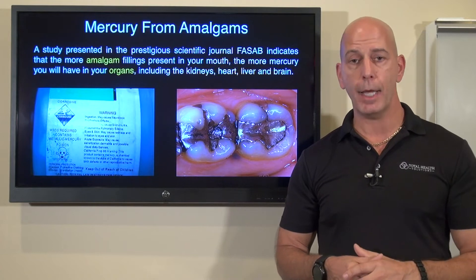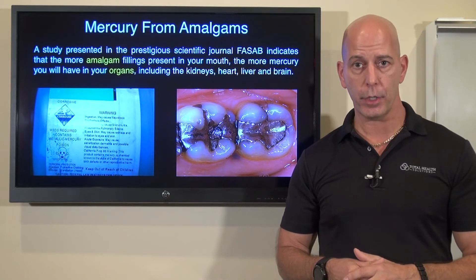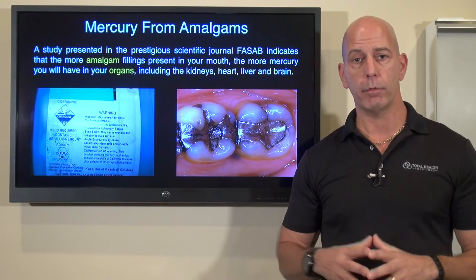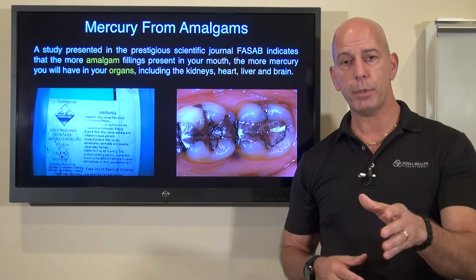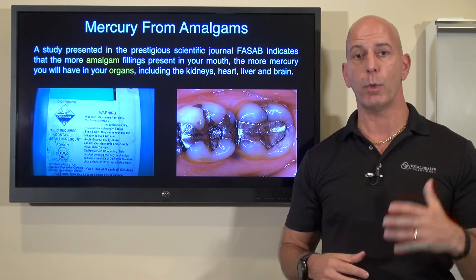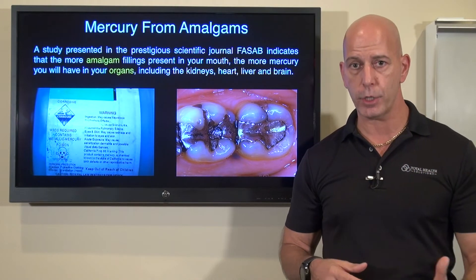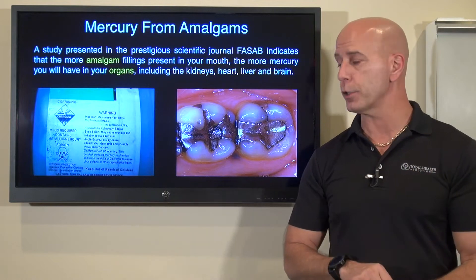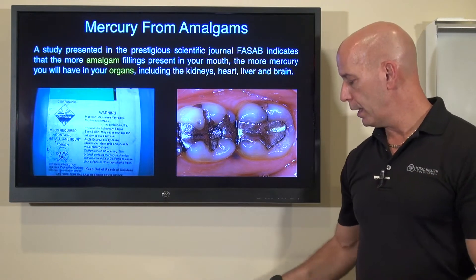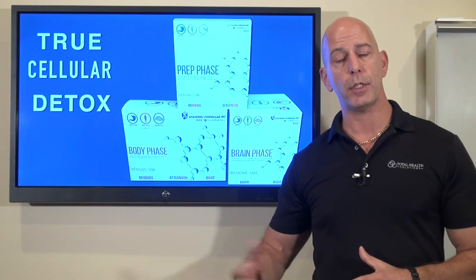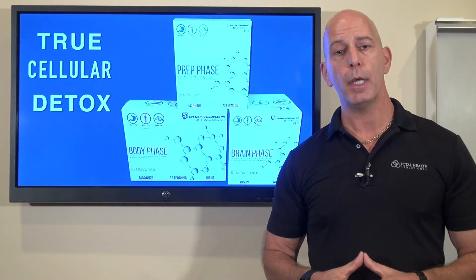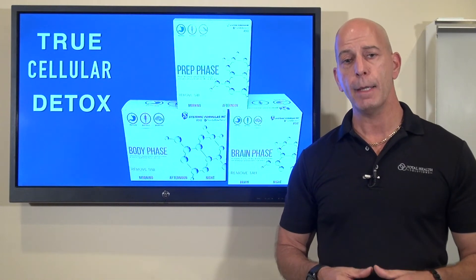Mercury is causing major, major health issues. When it comes to what we're talking about with diabetes, it creates inflammation in the body and affects how your cells are working. So in our office, we do something called True Cellular Detox — one of the things we do to help people rid these metals from their body.